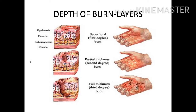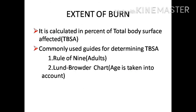The next classification is extent of burn, calculated as a percentage to find the total body surface area affected. When burns occur, we refer to 50% burns or 35% burns. This percentage is calculated by two formulas: the Rule of Nines and the Lund-Browder chart.